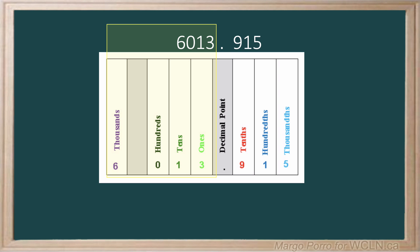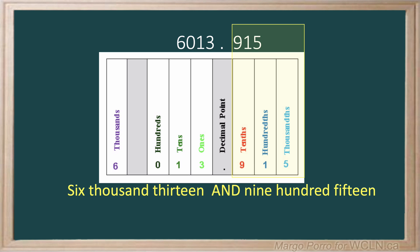First, we say the whole number: six thousand thirteen, followed by 'and' for the decimal. Next, we look at the numbers after the decimal and read them just like we would a whole number. In this case, nine hundred fifteen.